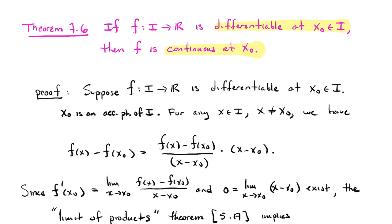How to prove it? Let's suppose we have some function on our interval that's differentiable at some point called x₀. x₀ is an element of an interval, so it's always an accumulation point — every point of an interval is an accumulation point, which follows from our work in Chapter 4. So I can speak about limits at it.